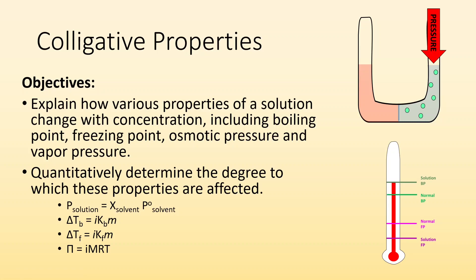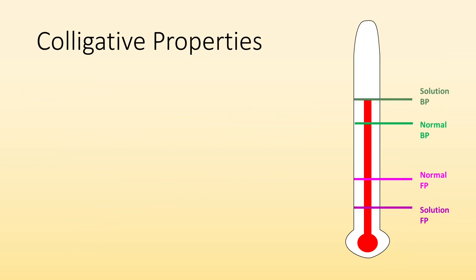How's it going ladies and gentlemen? Mr. Danio here again. This time we're going to take a look at some colligative properties. Our objectives will be to explain how various properties of a solution change with concentration, including boiling point, freezing point, osmotic pressure, and vapor pressure. Then we also want to be able to quantitatively determine the degree to which these properties are affected — what is the new vapor pressure, the new boiling point, the new freezing point, the osmotic pressure?